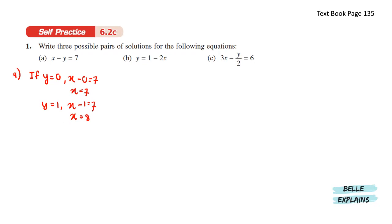If y equals 1, x minus 1 equals 7 which means x equals 8. If y equals 2, x equals 9. The possibilities here are (7, 0), (8, 1), and (9, 2).